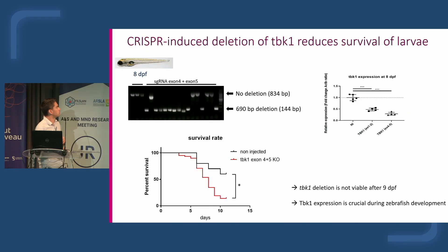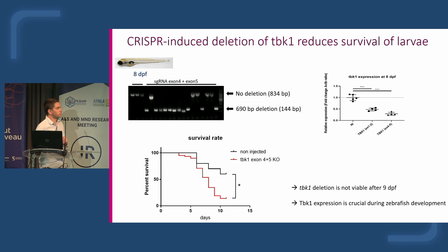We generated a complementary approach using CRISPR-Cas9 to induce direct deletions of the gene, targeting exons 4 and 5. The large deletion is visible on PCR, and we confirmed by qPCR a significant loss of TBK1 expression.